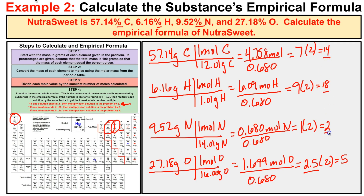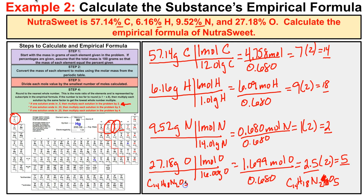These are our subscripts for the compound: C14, H18, N2, and O5. So the empirical formula for NutraSweet is C14H18N2O5.